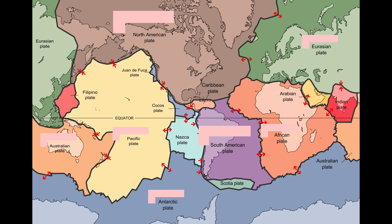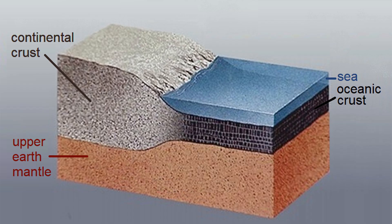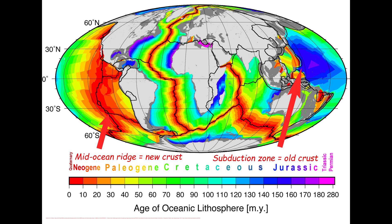Earth's lithosphere contains seven or eight main plates, depending on how they are classified, plus many smaller plates. Tectonic plates comprise oceanic lithosphere and thicker continental lithosphere, each topped by its own type of crust. The thickness of the oceanic lithosphere typically ranges from around six kilometers at mid-ocean ridges to over 100 kilometers near subduction zones.